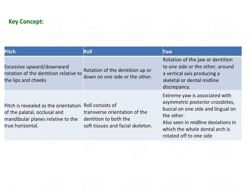To summarize: up-and-down rotation related to the lips and cheek is pitch; up-and-down rotation on one side is roll; and side-to-side movement or rotation of the jaw along a vertical axis is yaw. Yaw also results in asymmetric posterior crossbites.